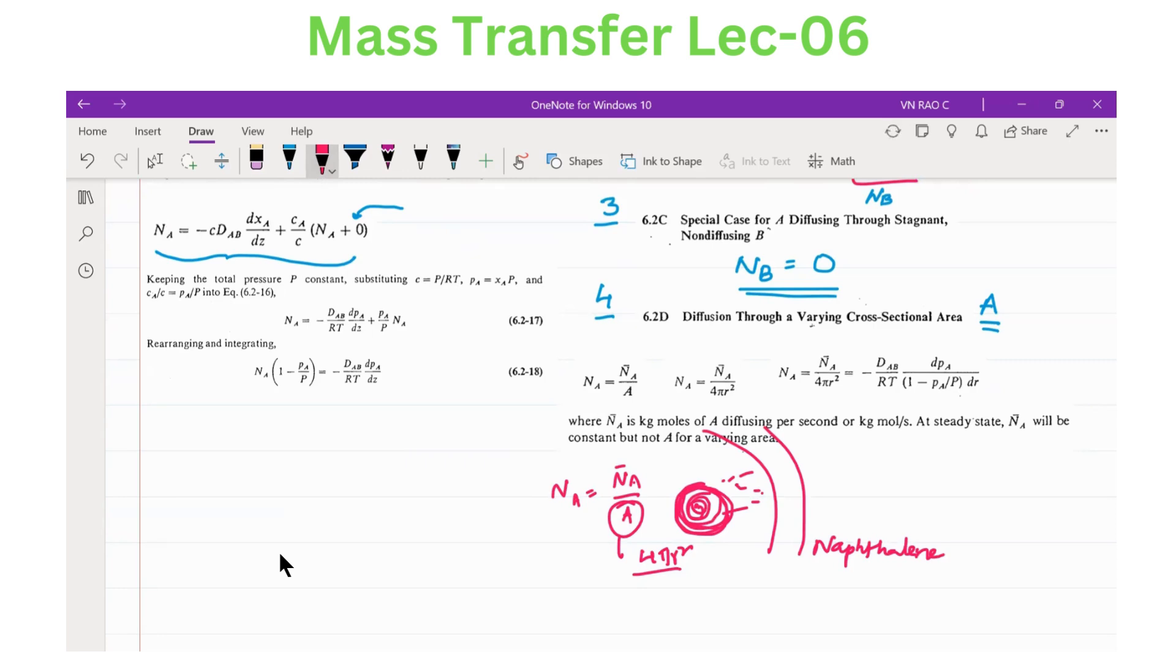There is a variable or varying cross-sectional area. In that scenario, in what way we write the equation? Suppose this is the equation we get. Against the right hand side and NA, we write NA bar by A. We keep these two equations and ultimately get this equation. Let me write the equation. NA into 1 minus PA by P equals minus DAB by RT DPA by DR.